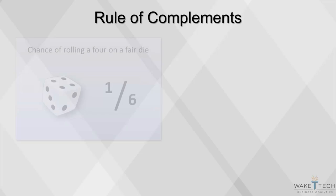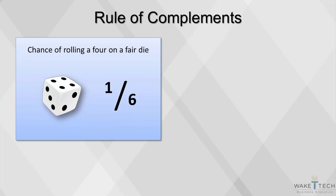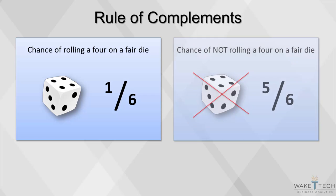In our dice example, the probability of getting a 4 was 1 in 6, so the probability of not getting a 4 is 1 minus 1 in 6, which equals 5 in 6.